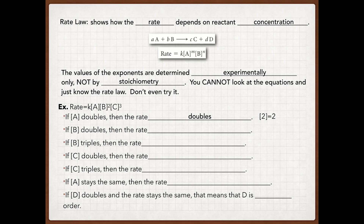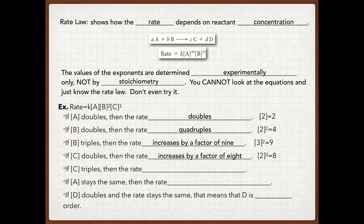What about for B? If B doubles, that's going to be two raised to the two, and your rate is going to quadruple. What if B triples? That's going to be three raised to the two, which gives you nine — so the rate increases by a factor of nine. What if C doubles? That's going to be two raised to the third because it's third order, so your rate is going to increase by a factor of eight. If C triples, that's three raised to the third, increasing by a factor of 27.